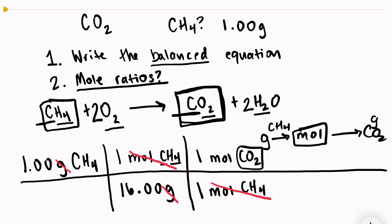I need one more step in this equation because I want to know how much carbon dioxide is produced in grams. So my last step in my dimensional analysis is to use my molar mass, one mole of CO2 over 44.01 grams of CO2.